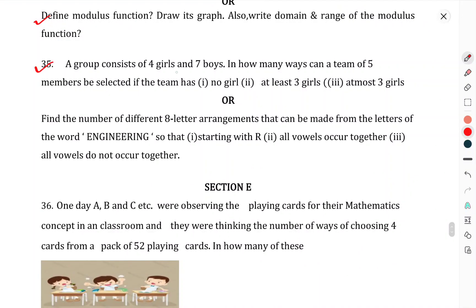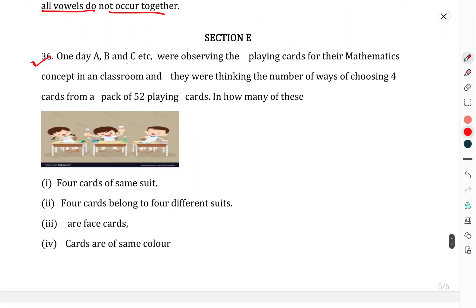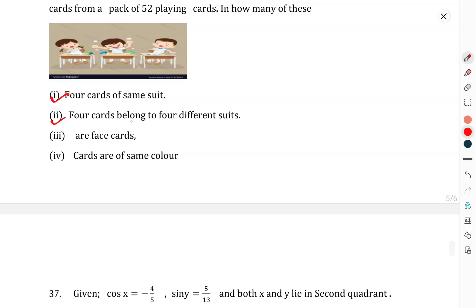Question number 35: A group consists of 4 girls and 7 boys. In how many ways can a team of 5 members be selected if the team has no girl, at least 3 girls, or at most 3 girls? Or find the number of different 8-letter arrangements that can be made from the letters of the word ENGINEERING so that they start with I, all vowels occur together, or all vowels do not occur together. Now we come to Section E. Some students are observing playing cards for mathematics concepts in a classroom. They were thinking about the number of ways of choosing 4 cards from a pack of 52 cards. In how many ways are these 4 cards of the same suit, 4 cards belong to different suits, are face cards, or cards are of the same color?